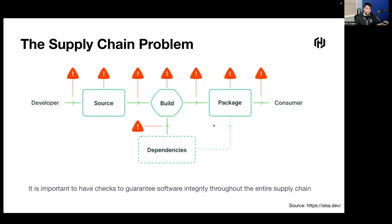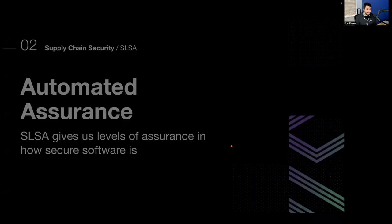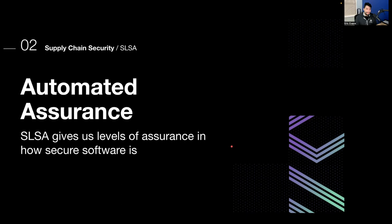How do we actually solve this problem of an almost exponential increase in software supply chain attacks? That's where automated assurance comes in. I call it automated assurance because SLSA itself requires some level of automation. With SLSA, we get levels of assurance in how secure software is. SLSA — for those who don't know — is the Supply Chain Levels for Software Artifacts. It is a security framework, a checklist of standards and controls that prevents tampering and improves integrity, secures packages and infrastructure within your projects.